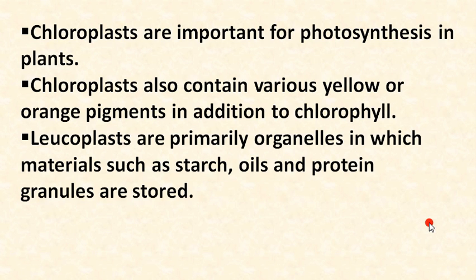Chloroplasts are important for photosynthesis in plants. Energy is generated during photosynthesis, and the plant takes that energy from sunlight. Chloroplasts also contain various yellow and orange pigments in addition to chlorophyll — that is why fruits and flowers have different colors like orange, yellow, and blue.